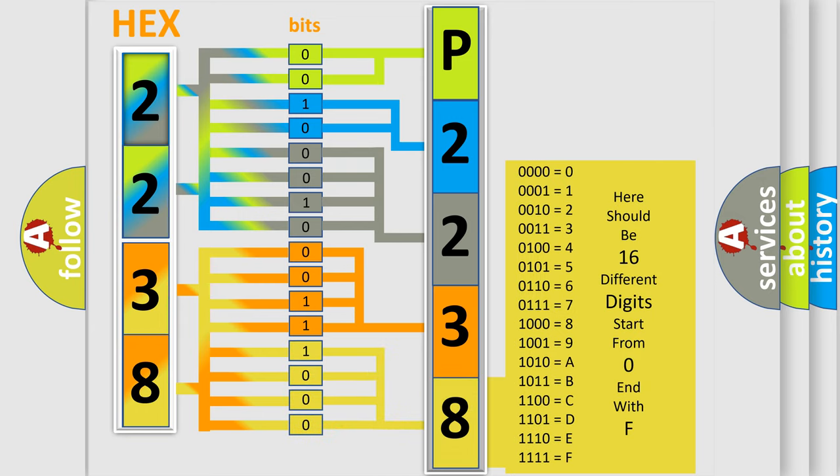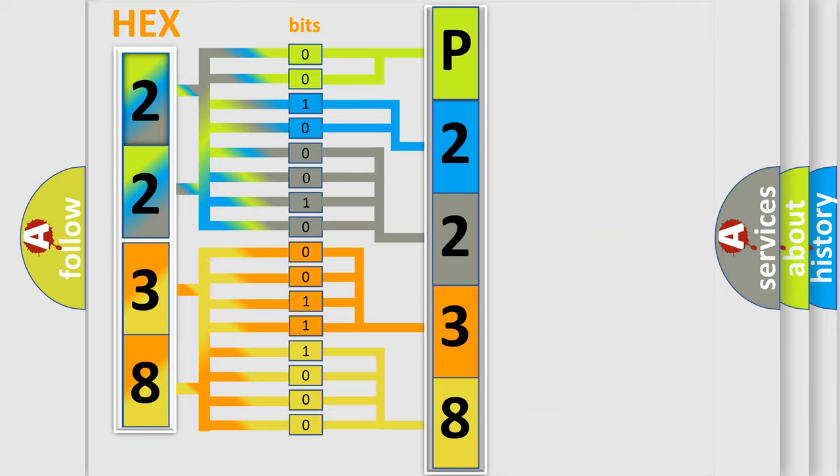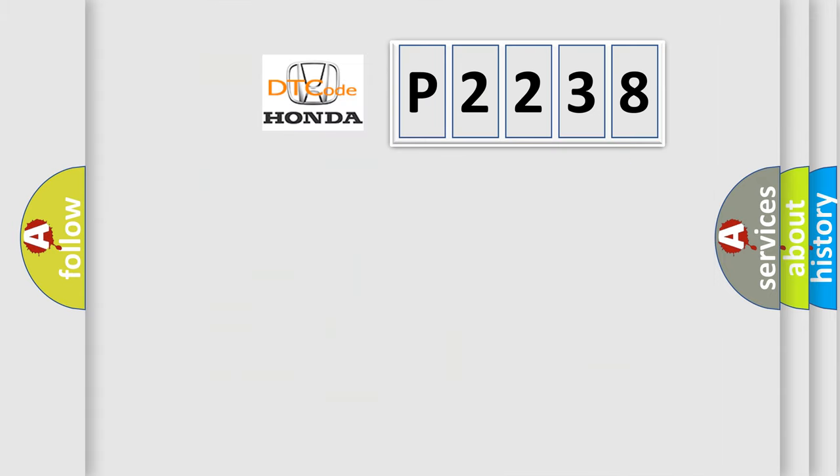A single byte conceals 256 possible combinations. We now know in what way the diagnostic tool translates the received information into a more comprehensible format. The number itself does not make sense to us if we cannot assign information about what it actually expresses. So, what does the diagnostic trouble code P2238 interpret specifically?